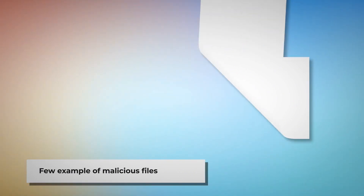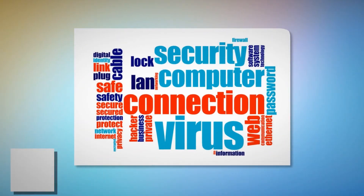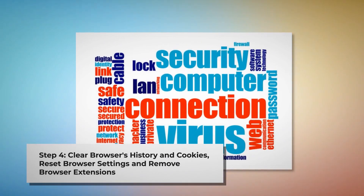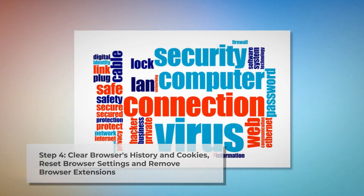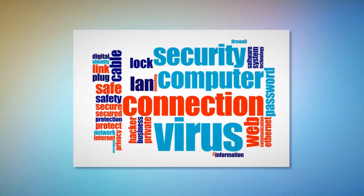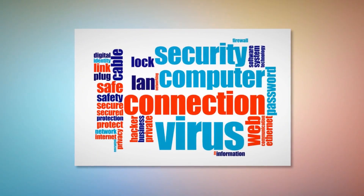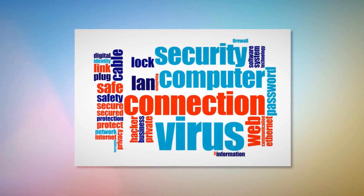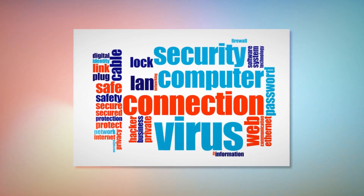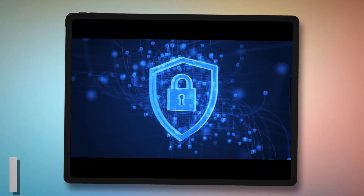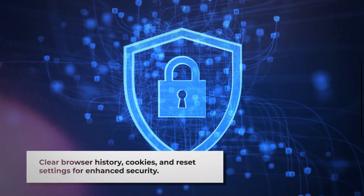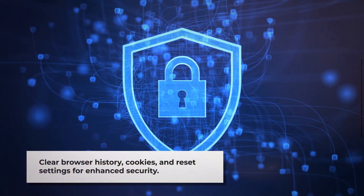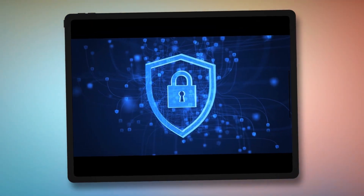Step four: clear your browser's history and cookies, reset browser settings, and remove or disable unknown browser extensions. Once you delete the harmful files as mentioned in step three, you should also delete malicious or unknown extensions from your browsers — Safari, Chrome, Firefox, Opera, or whichever you are using. You should also delete browser history and cookies, and reset your browser. Note: before resetting browser settings, it's always a good idea to back up your bookmarks.